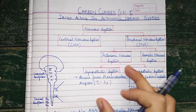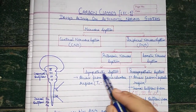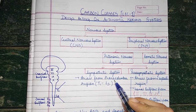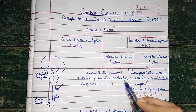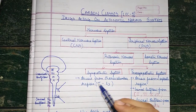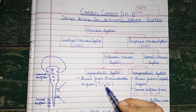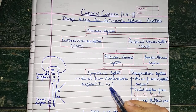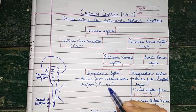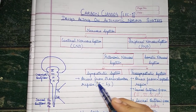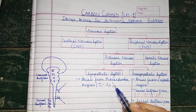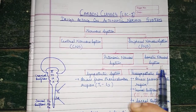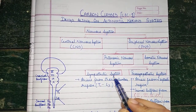The sympathetic system arises from the thoracolumbar region, specifically from T1 to L3. This part is also called the thoracolumbar outflow.